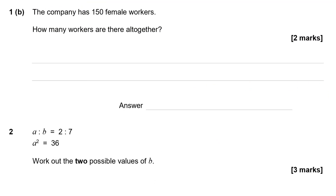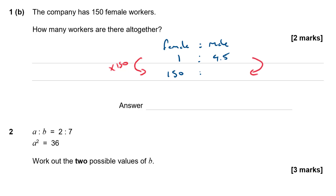Part 1b says the company has 150 female workers. How many workers are there altogether? We've already been given the ratio of female to male employees — it was 1 to 4.5. If we're told that there are 150 females, we can use this ratio to work out how many males there are. If we start with 1 female and multiply up to get 150 females, we can do the same thing on the other side — scale this up by a factor of 150. So 150 doubled is 300, doubled again is 600, and 0.5 of 150 is another 75. So that makes 675 males altogether.